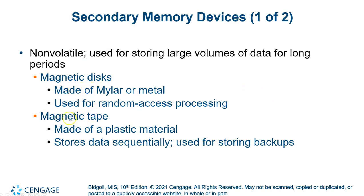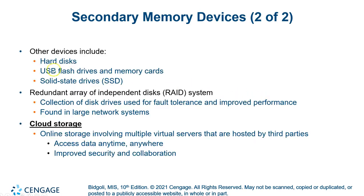Magnetic disks and magnetic tape — some of you have seen 8-track tapes or reel-to-reel tapes. We still store data on tape; it has to be stored sequentially, which is good for backing up large amounts of data. It's very cheap and very reliable. Many things are also stored on magnetic disks, USB drives, hard drives, and solid-state devices.